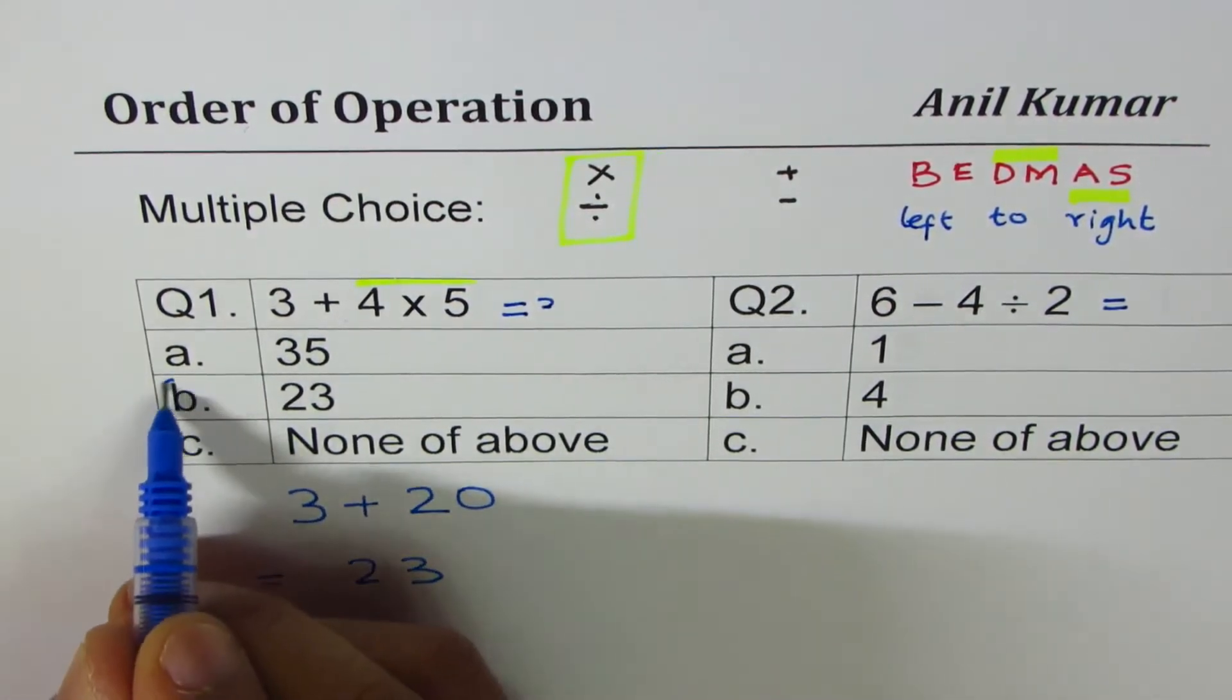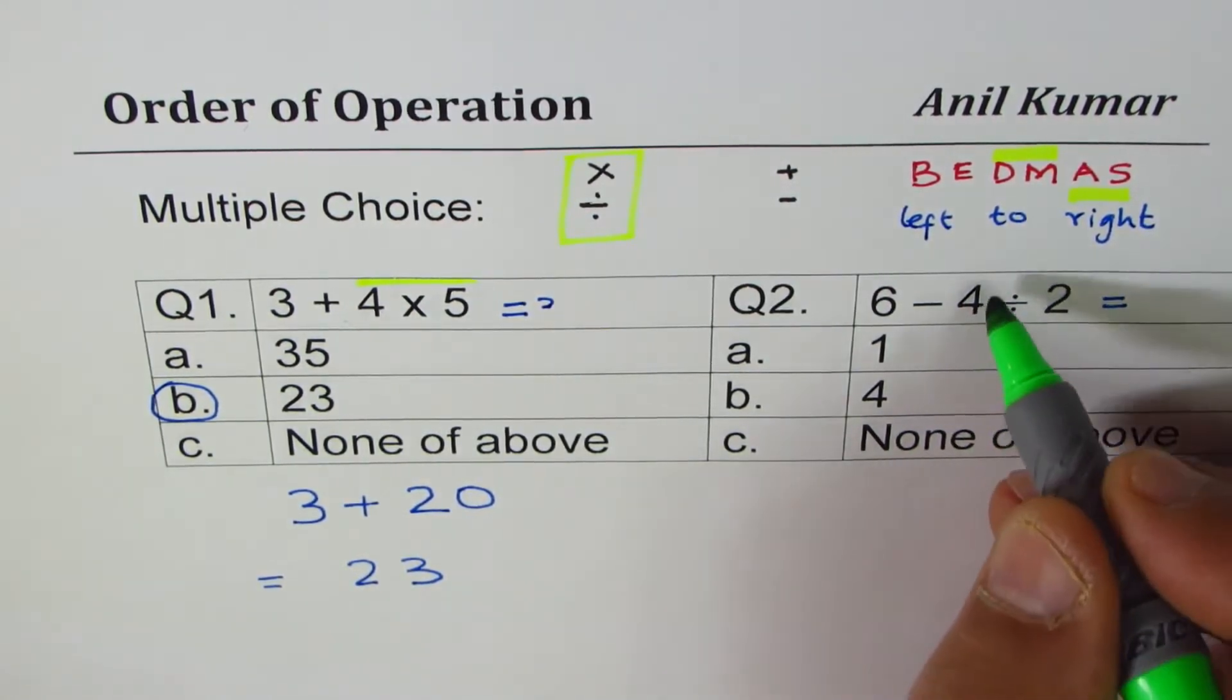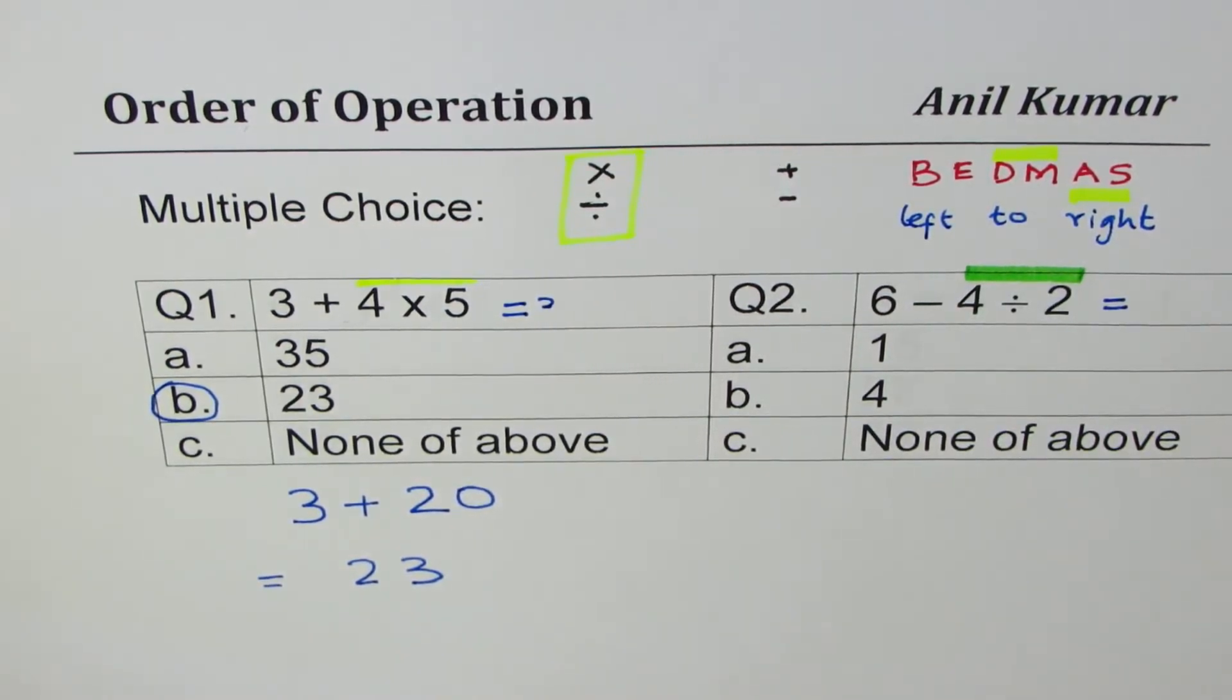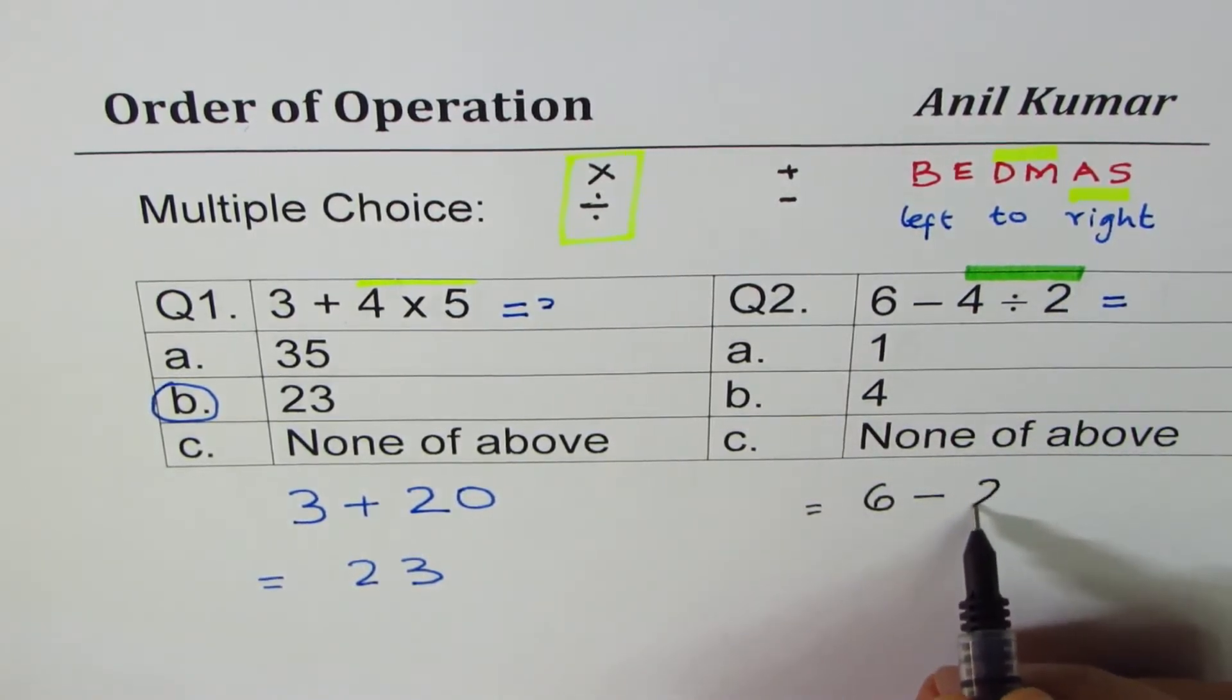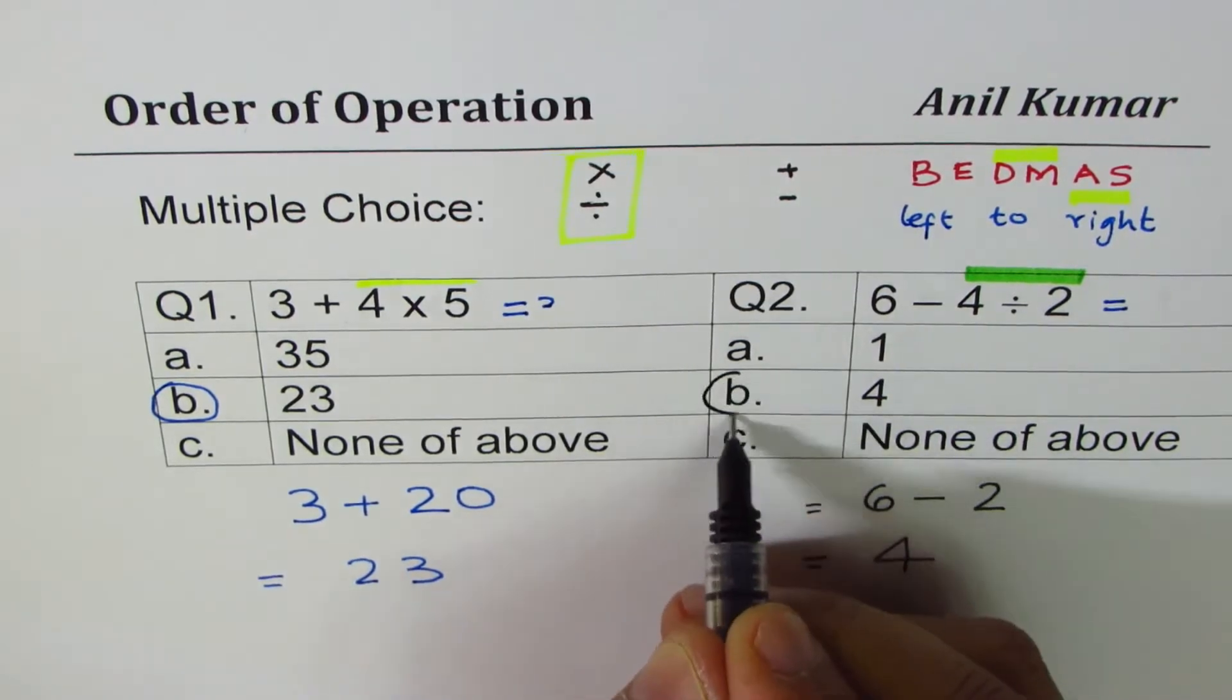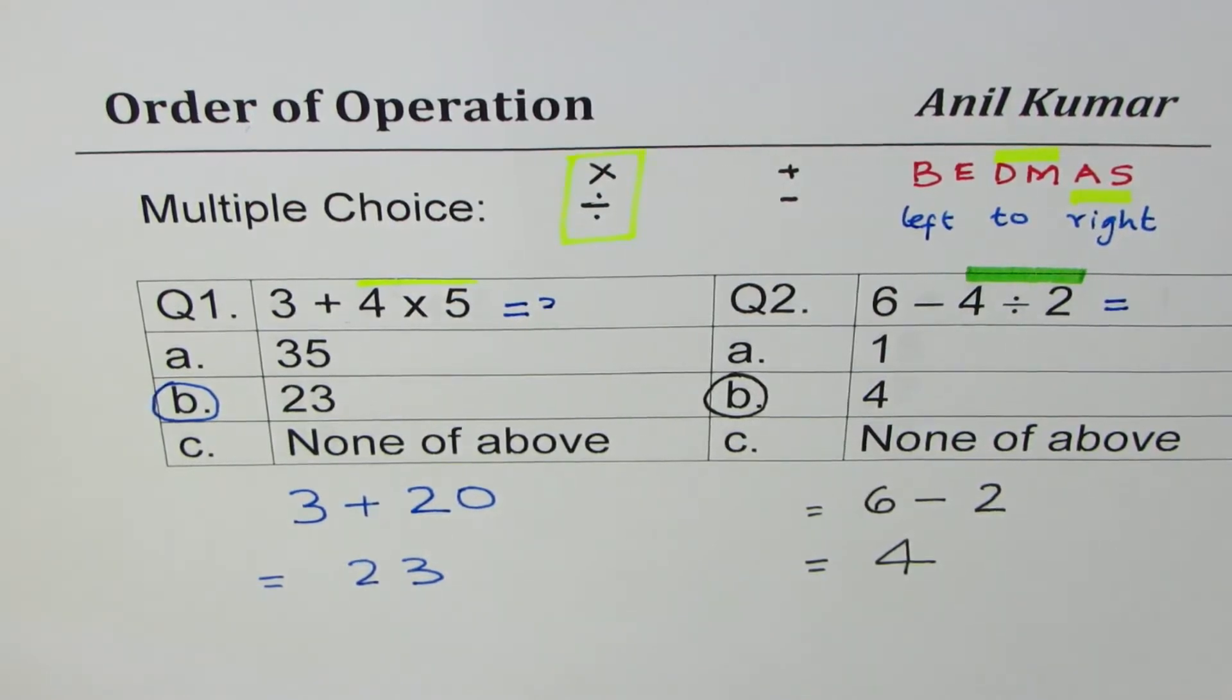So option B is the correct option. Now I think you can do question number 2 on your own. First thing we are going to do is division. First we will divide 4 by 2. So to solve this question you can write this as 6 minus what is 4 divided by 2. 4 divided by 2 is 2. 6 minus 2 is 4. So we get B as the answer for this one.